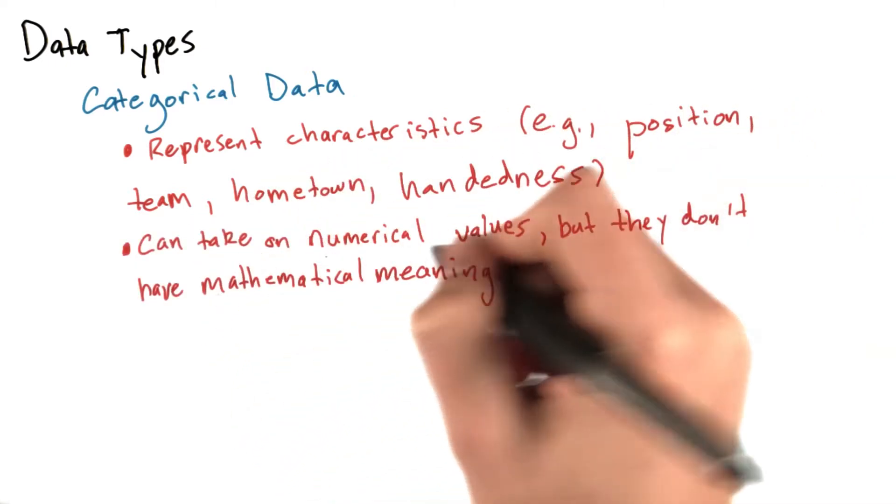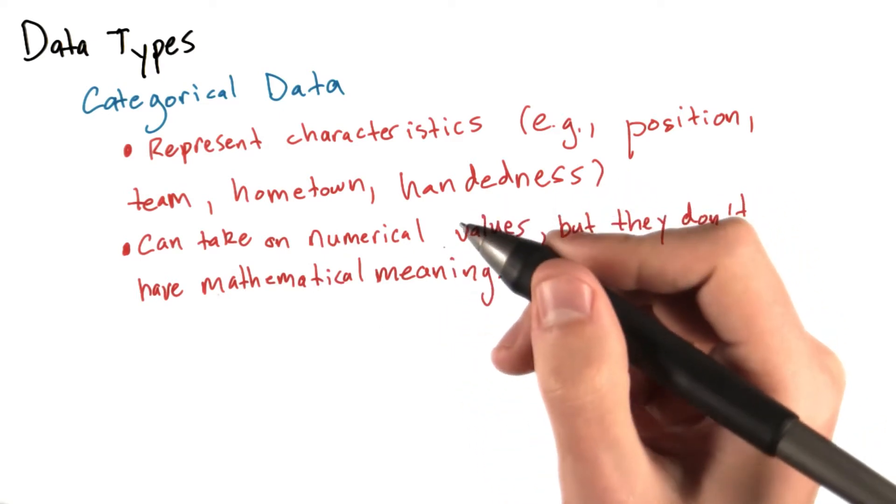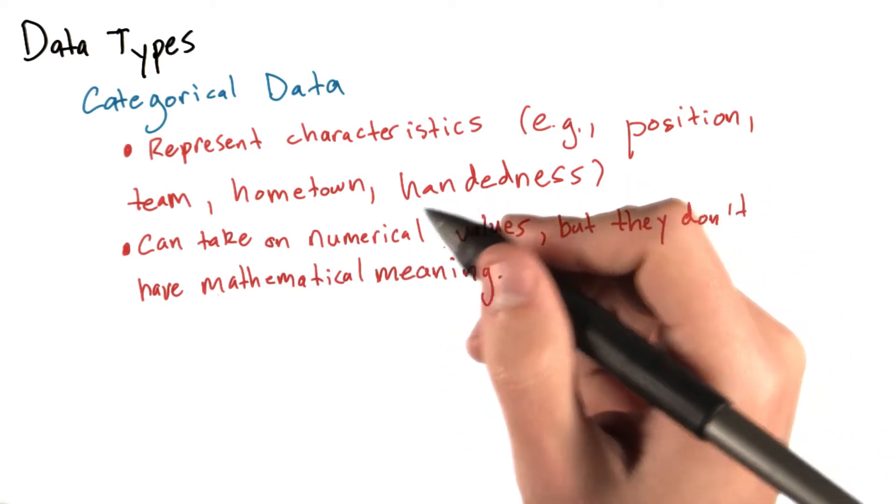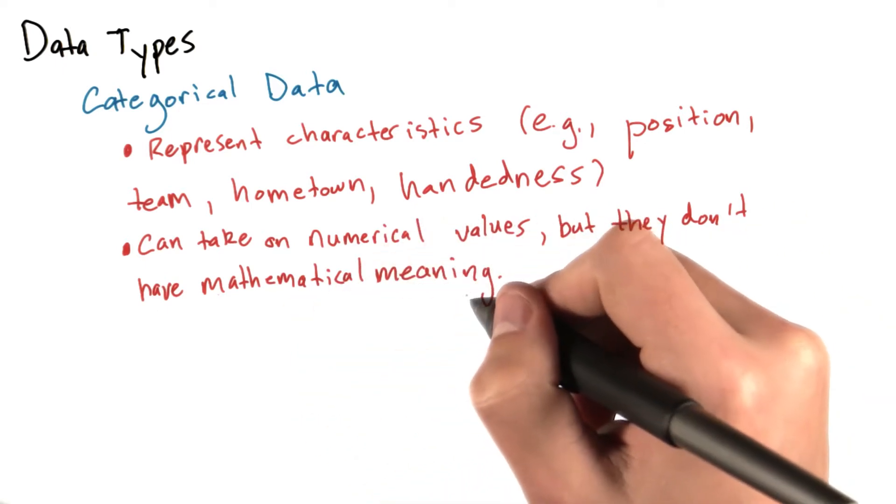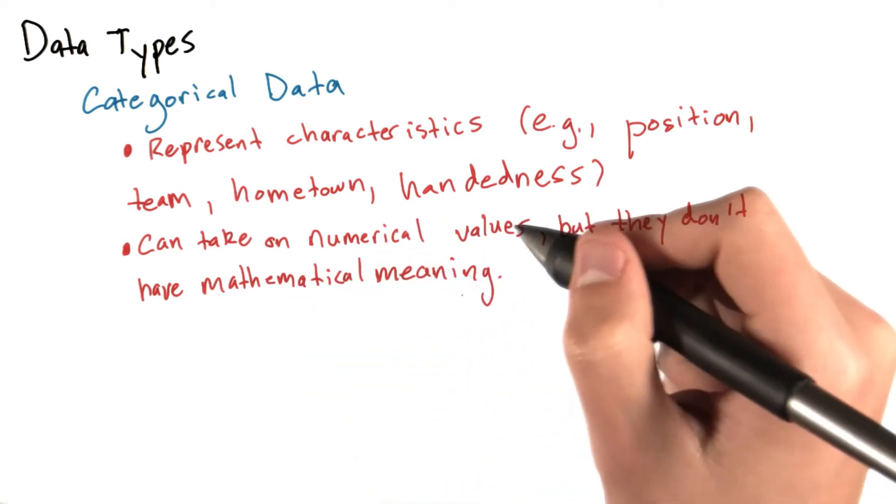Categorical data can take on numerical values. For example, maybe we'd use one for first baseman and two for second baseman. But these numbers don't have a mathematical meaning. We can't add them together or take the average.